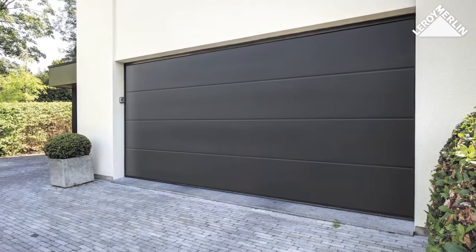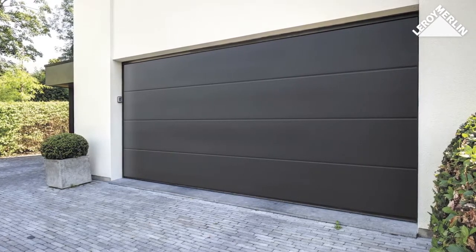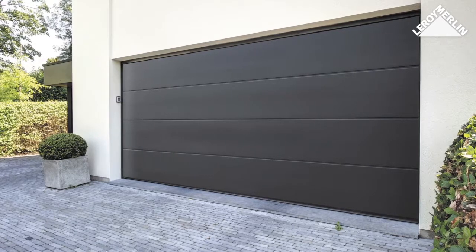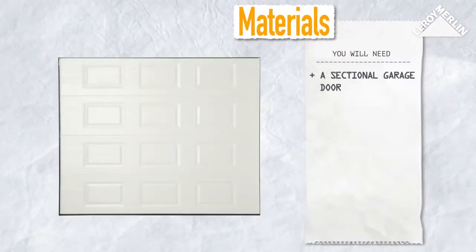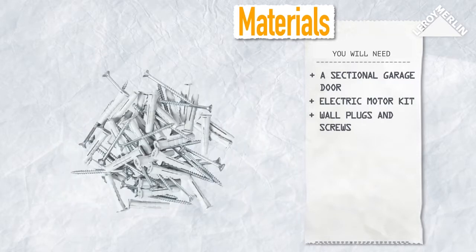Make sure you follow the installation instructions that come with your door. You will need a sectional garage door and its electric motor kit. You will also need wall plugs and screws suitable for the walls as well as some blocks.